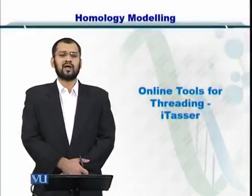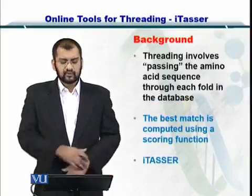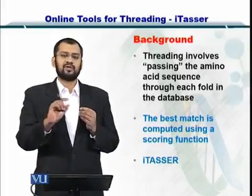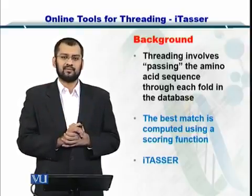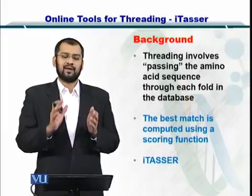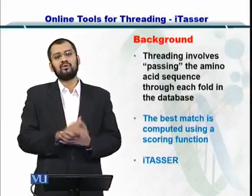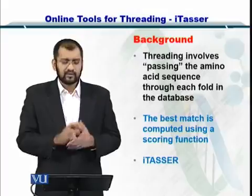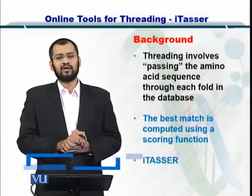Now we will look at a software that can be used to perform fold recognition or threading. The threading process involves passing the primary sequence of a protein through the various folds from fold databases, thereby arriving at the best collection of folds and bringing those folds into a single structure to create a tertiary structure for the protein. The best match is scored using z-scores to finalize the prediction.